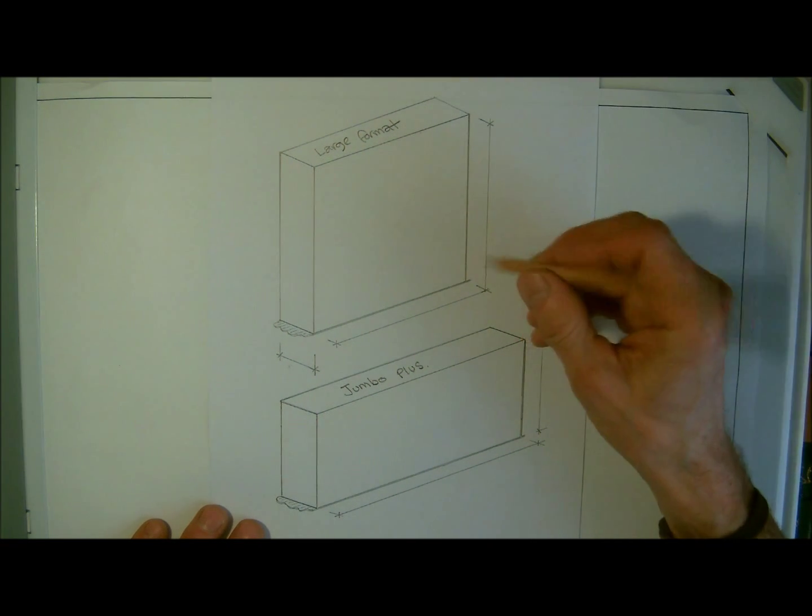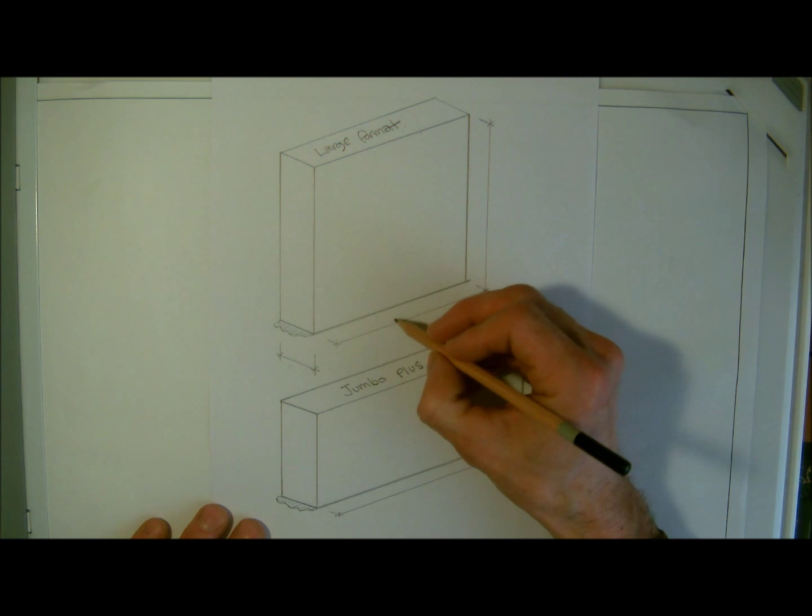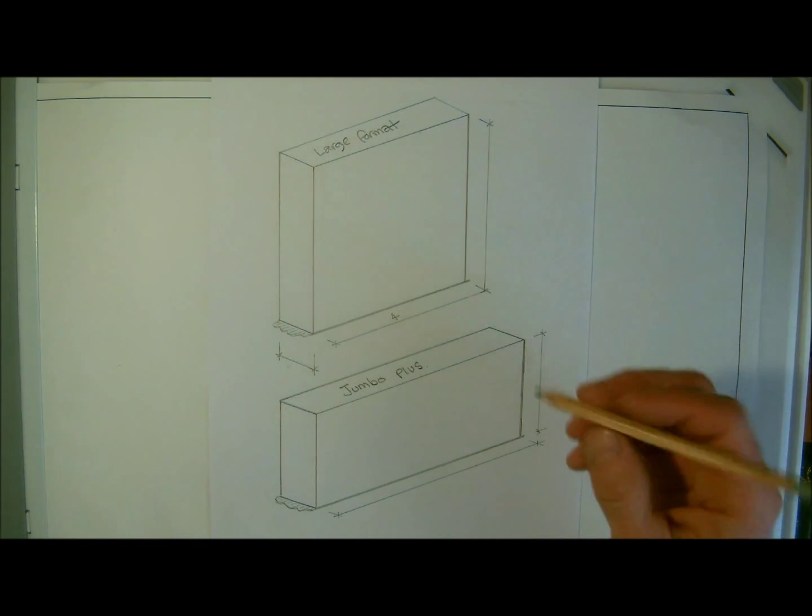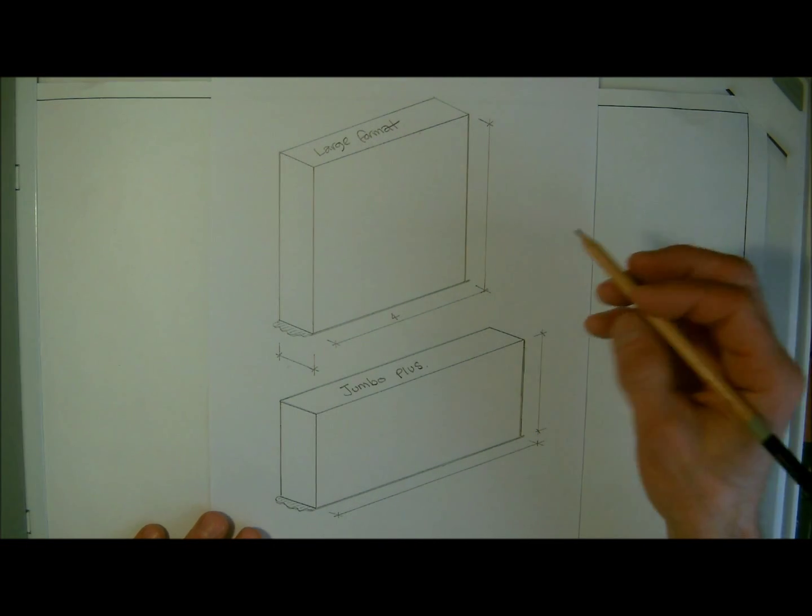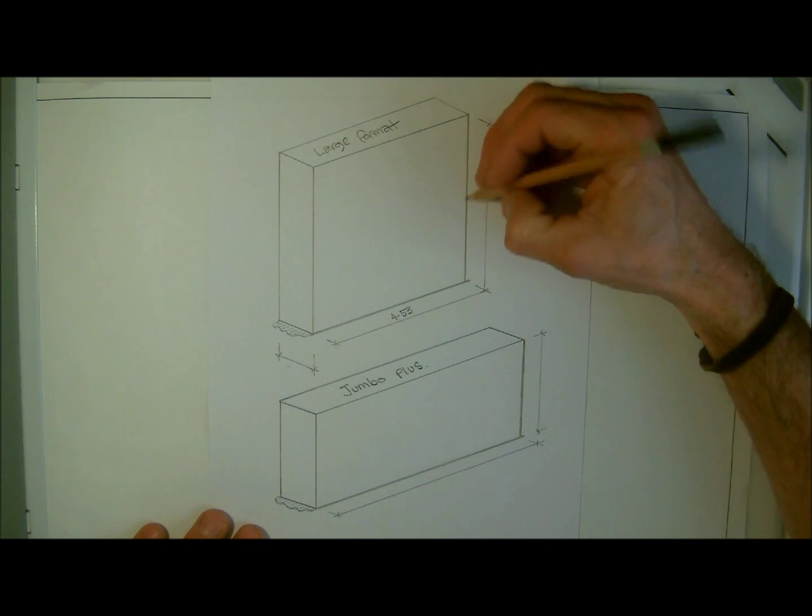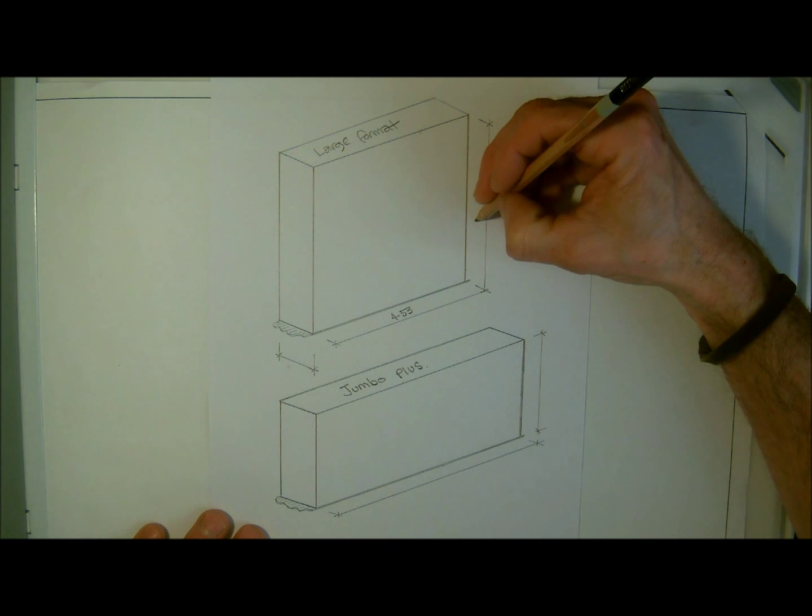OK, so with the large format they're virtually square, but not quite, they're 450 long, but with a joint we're looking at a 2 to 3 mil joint. So we'll go for the 3 mil joint, so they're going to be 553 long, and they're 440 high, so again we're going to be looking at 443 in height.